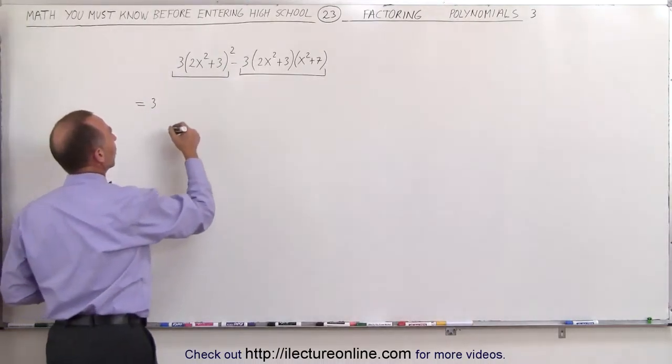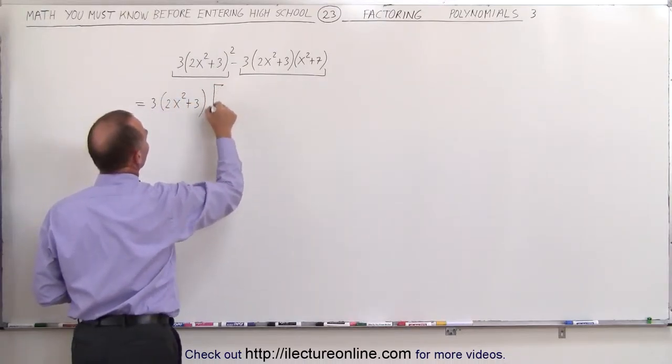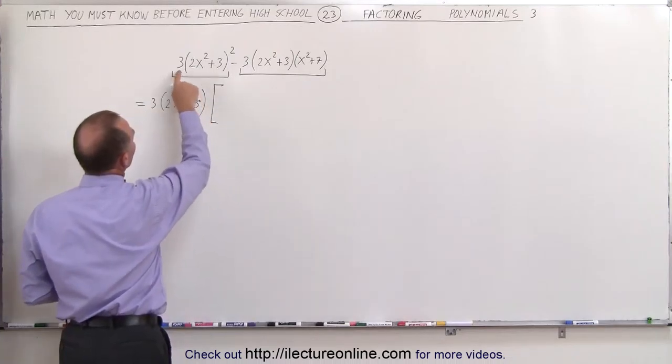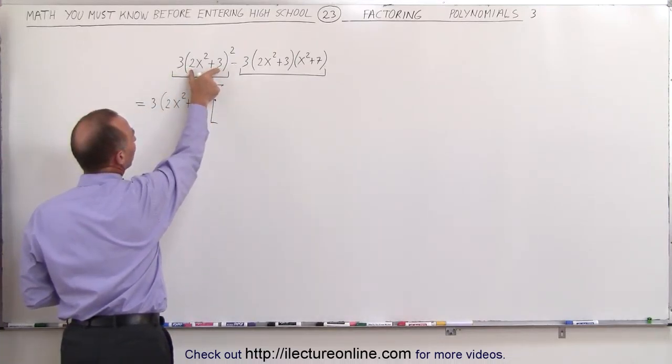We can factor out the 2x squared plus 3 term, which is 2x squared plus 3, and then let's see what's left. On the left side, the 3 is gone, and one of these is gone, that leaves us with one more 2x squared plus 3.